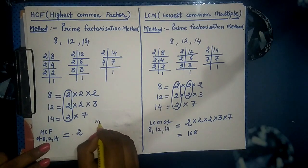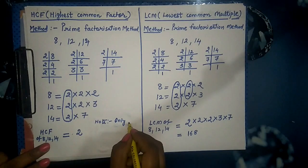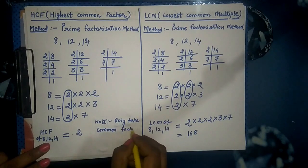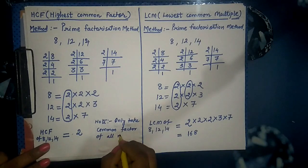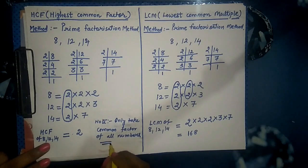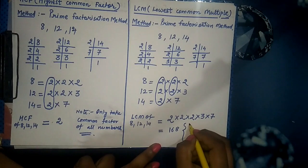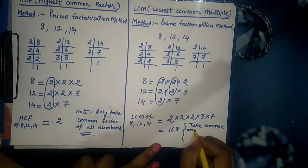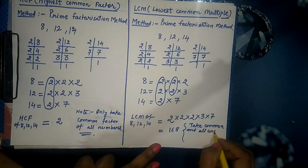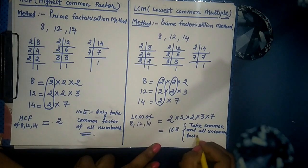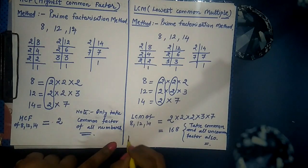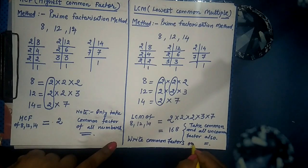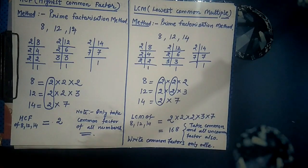Here is a summary: For HCF, we simply write all the common factors present in all the numbers and ignore factors that are not common to all. Note — take only the common factors of all the numbers. For LCM, it is the opposite — we take both common and all uncommon factors. One important point: we write repeated factors only once while writing in multiplication form.